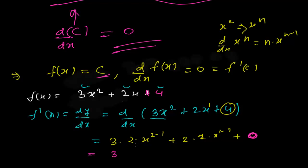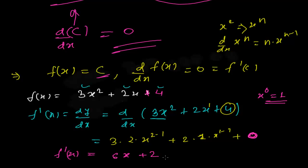Simplifying: 3 times 2 gives 6x^1, which is just 6x. Then 2 times 1 times x^(1−1) = 2 times x^0 = 2 times 1 = 2. So our derivative f'(x) equals 6x + 2.